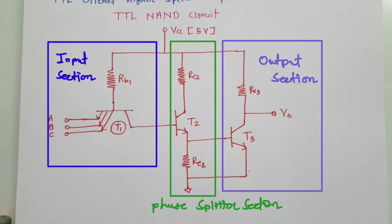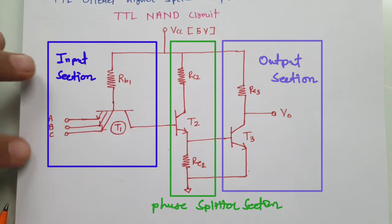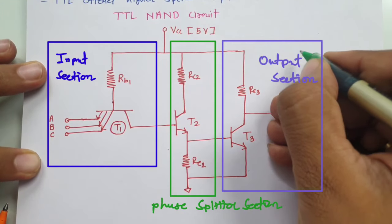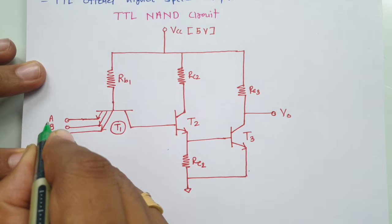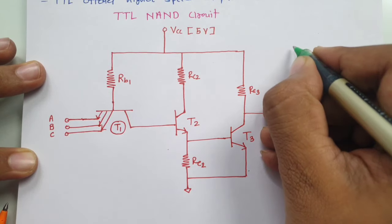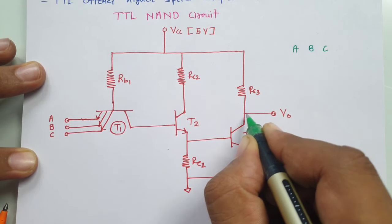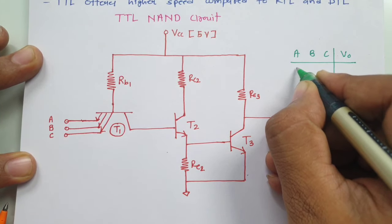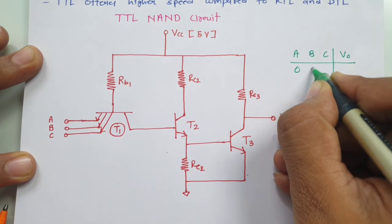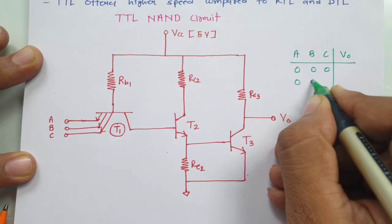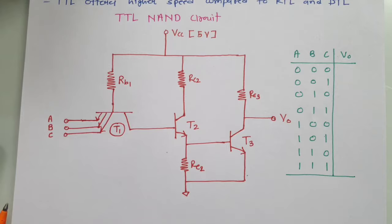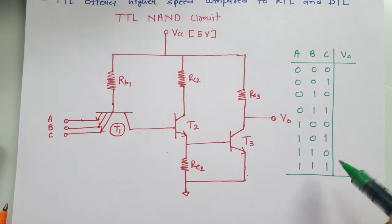This circuit functions like a NAND gate. Let me write a truth table — here we have three inputs A, B, and C, and output V0. The input combinations start from 0, 0, 0 and go up to 1, 1, 1. Now I will show what the output will be with respect to this circuit.